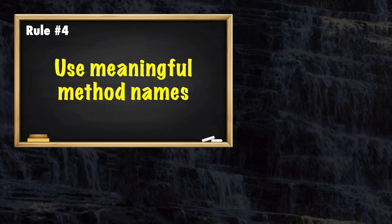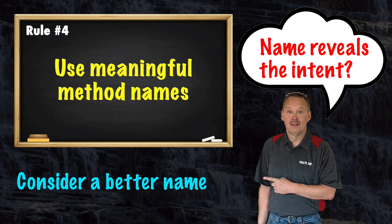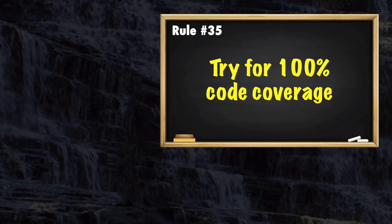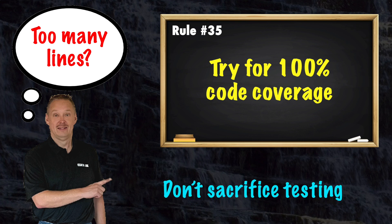Rule number four: does the name of the method accurately describe the action being performed? If not, consider a better name that reveals the intent. Rule 35: with too many lines in a method, often proper testing and line coverage is sacrificed.